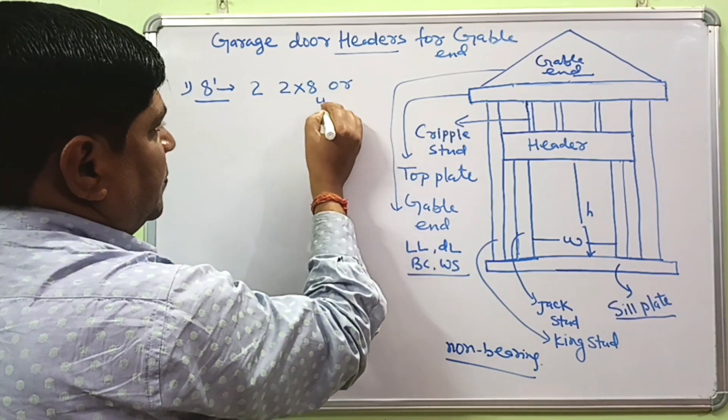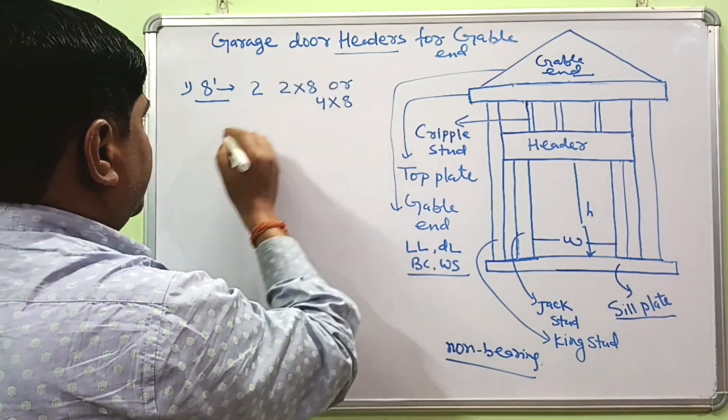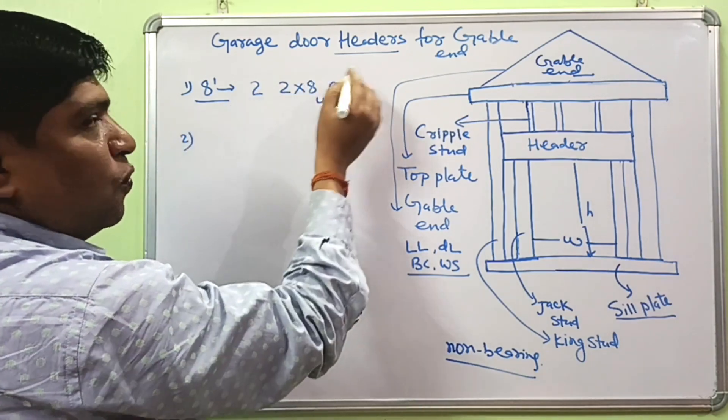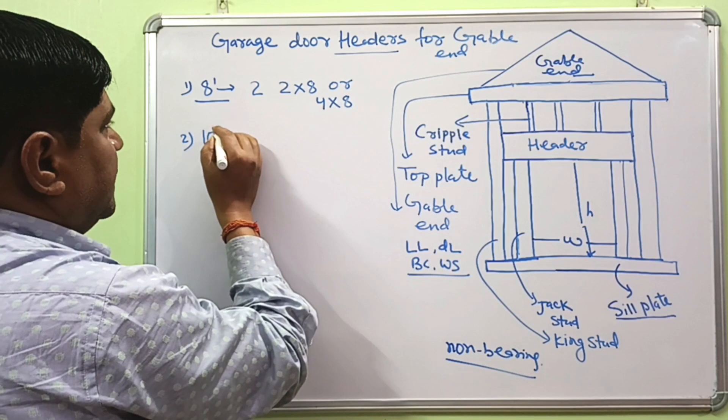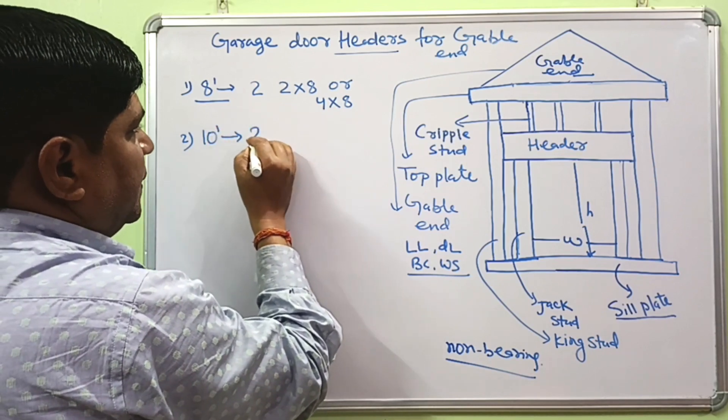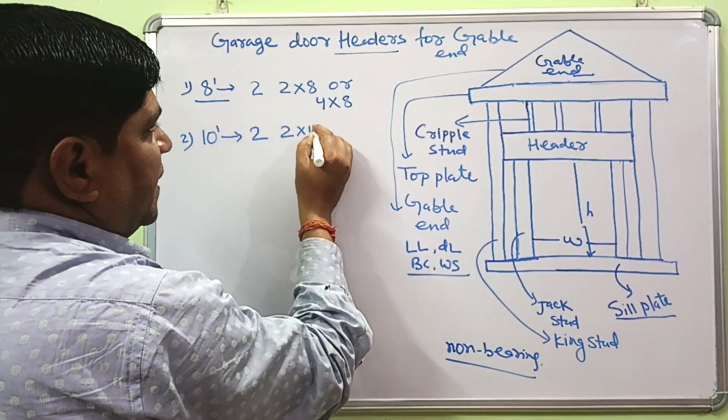If your garage door opening is about 10 foot, you can use double 2 by 10 lumber, or it can also be written as 4 by 10.